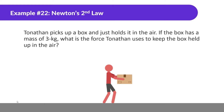Tonton picks up a box and just holds it in the air. If the box has a mass of 3 kg, what force does Tonton use to keep the box held up? There's gravity pulling down — 3 times 10 equals 30 Newtons — and a force applied holding it up. Since it's not moving, acceleration is zero, so force applied must equal the force of gravity. Tonton uses 30 Newtons to keep the box in the air.